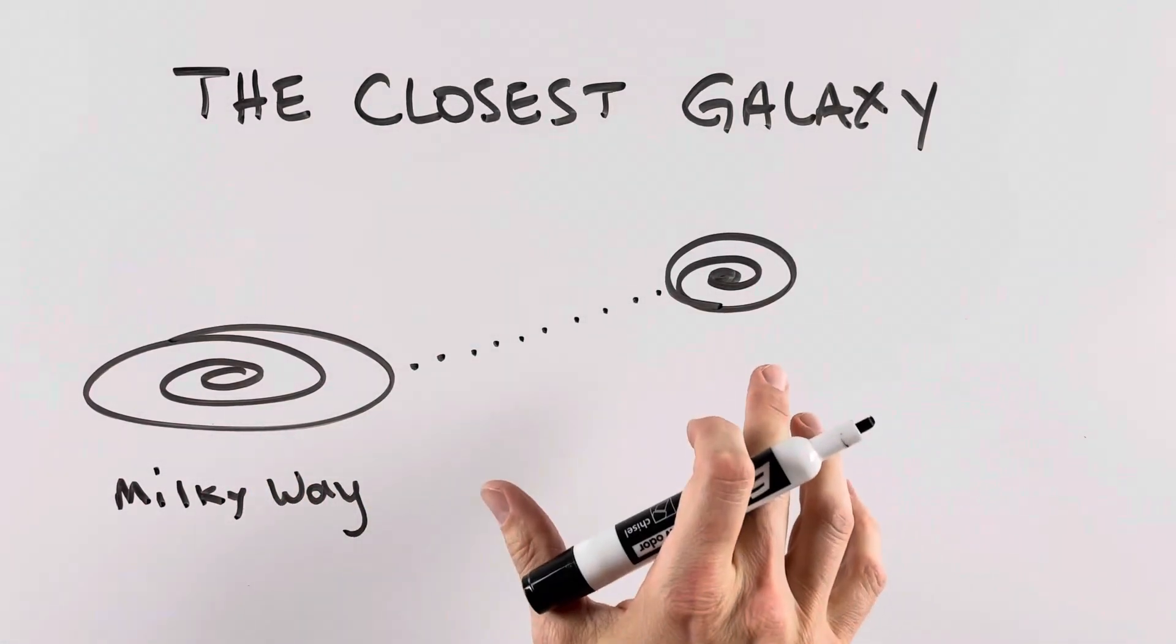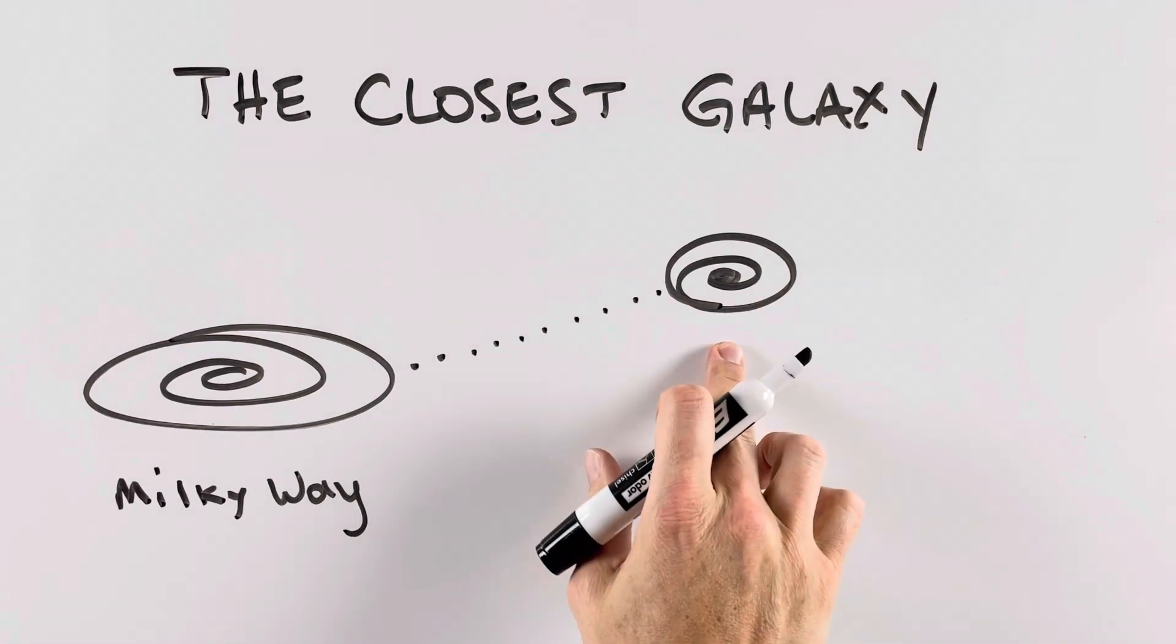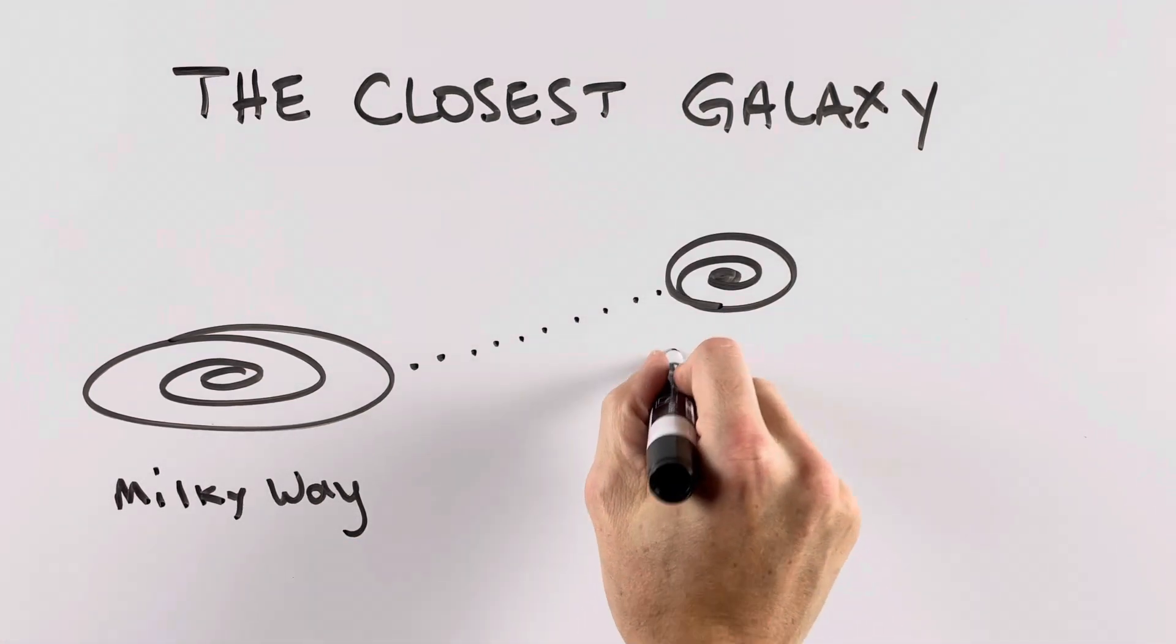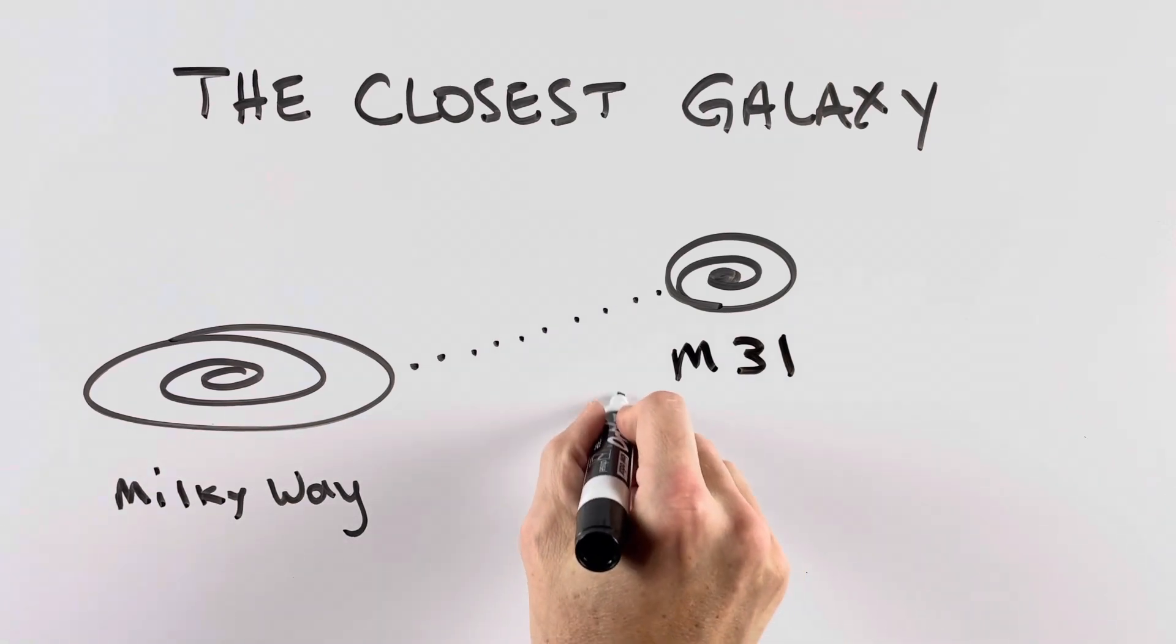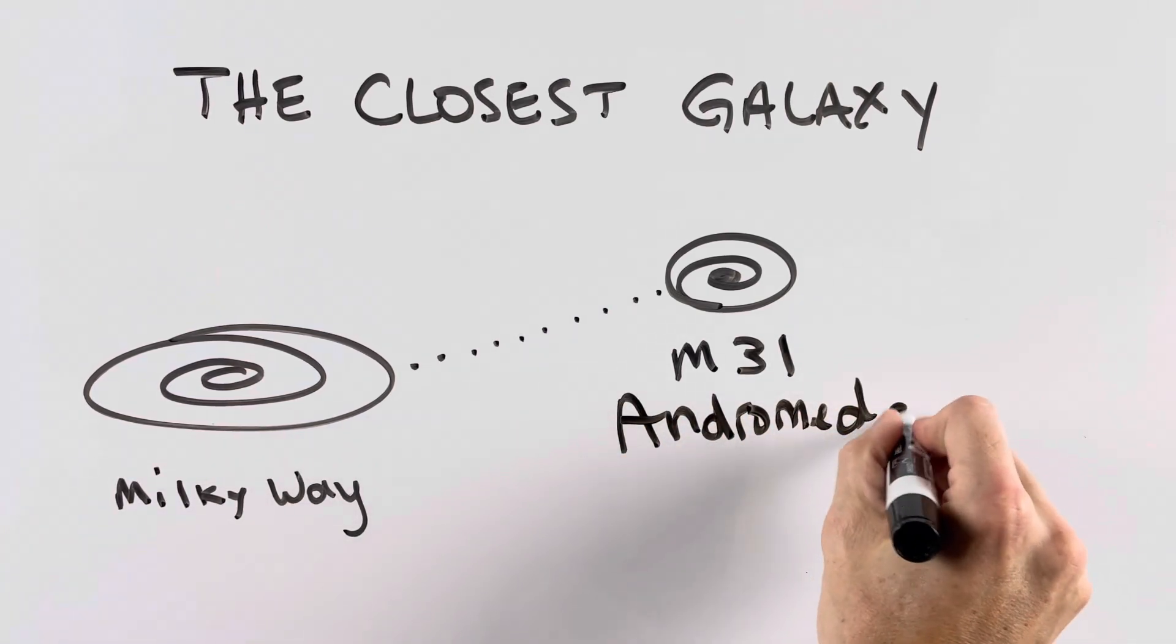How far away is the closest galaxy to us, to the Milky Way galaxy? The closest galaxy is technically called M31, also known as the Andromeda galaxy.